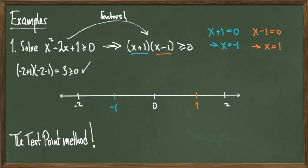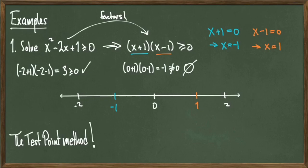Plugging -2 into the polynomial gives +3, which is greater than 0 — so x = -2 works. Plugging in 0 gives -1, which is not greater than or equal to 0, so that part of the number line I don't want. Plugging in +2 gives 3, which is again greater than or equal to 0, so that part of the number line I want as well.